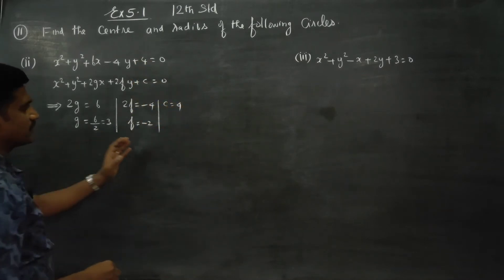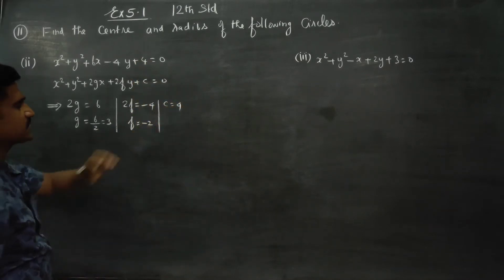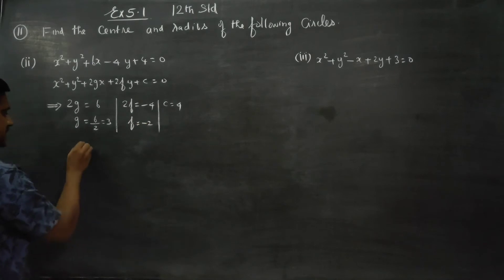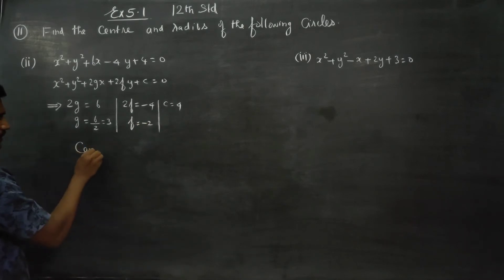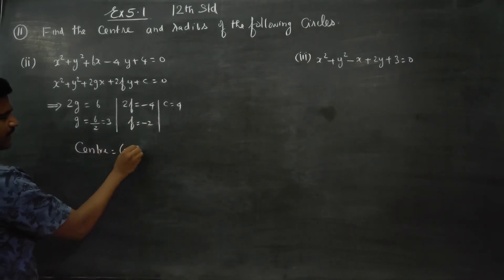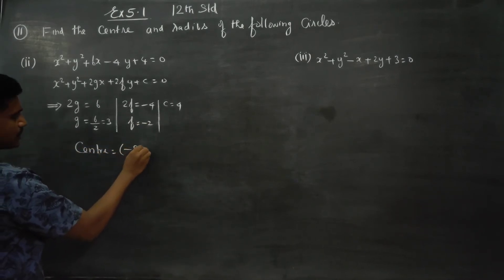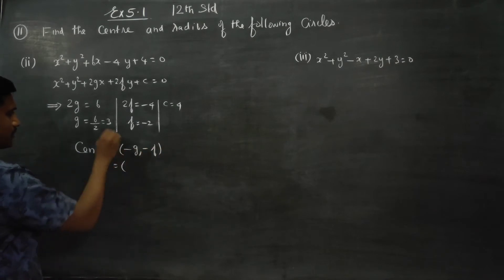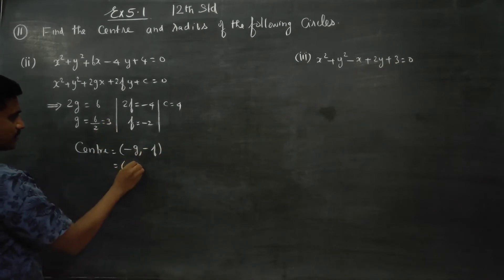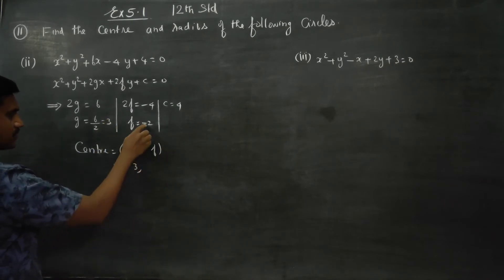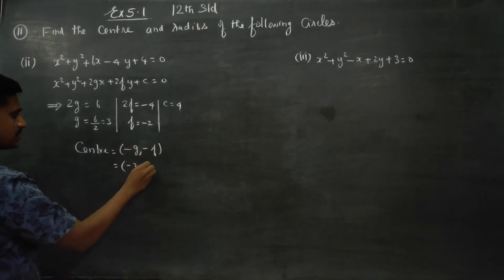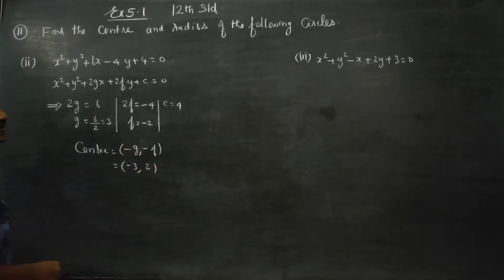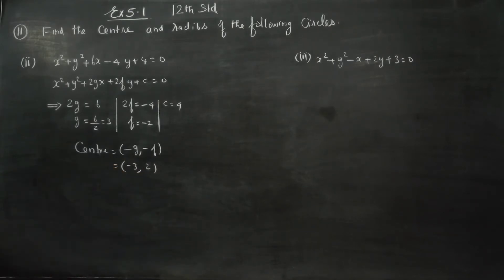G, f, and c are ready. Using the center formula, the center of the circle is (−g, −f). So minus g gives minus 3, and minus f gives minus 2. Therefore, the center is (−3, 2).